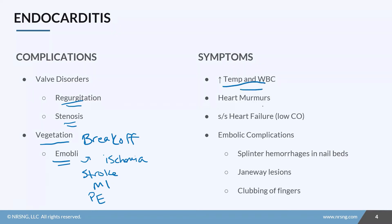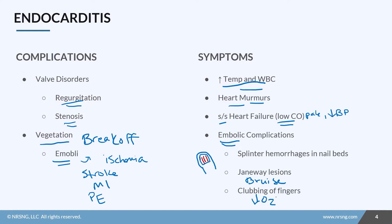As an infectious process, you'll see fevers and an increased white blood cell count. With valve involvement you'll hear heart murmurs, and due to pumping difficulties you may see signs of heart failure and low cardiac output — pallor and low blood pressure. Additional embolic signs include splinter hemorrhages, which are streaks of blood within the nail bed, Janeway lesions which are bruises on the hands and feet, and finger clubbing from decreased oxygen to the tissues.